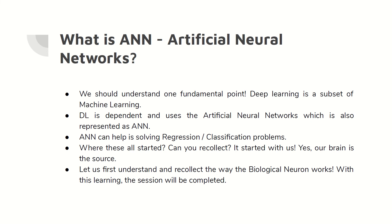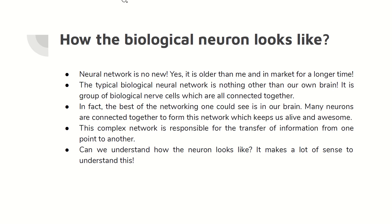Deep learning is a subset of machine learning. It is dependent on and uses artificial neural networks, always called ANN. ANN can also be used to solve regression and classification problems. Our biological neurons — the neurons of the brain — are the most important inspiration for scientists to go ahead and create artificial neural networks. We need to understand how exactly biological neurons look like. The neural network is not new; it's actually an older scenario, very frequently used for a long time, but being implemented for solving this kind of problem is new.